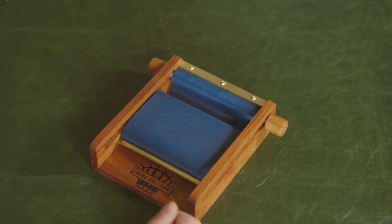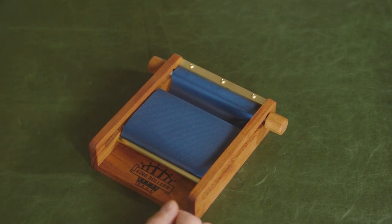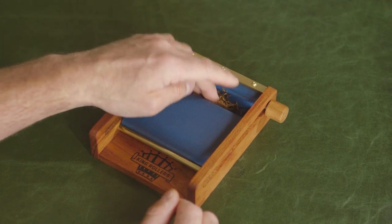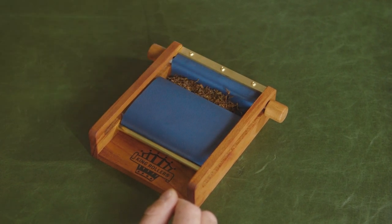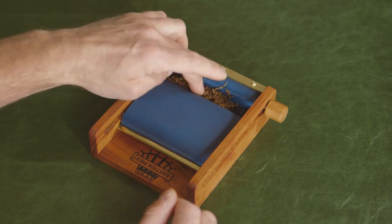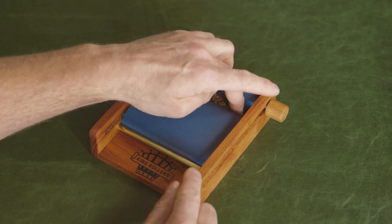For both cigarettes and joints, evenly add shredded tobacco or ground cannabis to the pocket and lightly tamp it down. It may take a little trial and error to figure out how much to add, and of course, this will change depending on the diameter and length you are rolling.